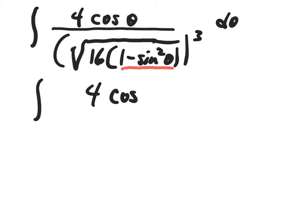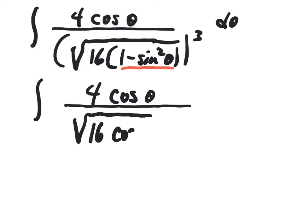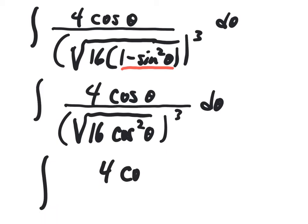This part here you can rewrite as cosine squared, and when you take the square root of 16 cosine squared, you get 4 cosine theta. I keep trying to forget that cube, it's very easy to do. Square root, that's 4 cosine theta.